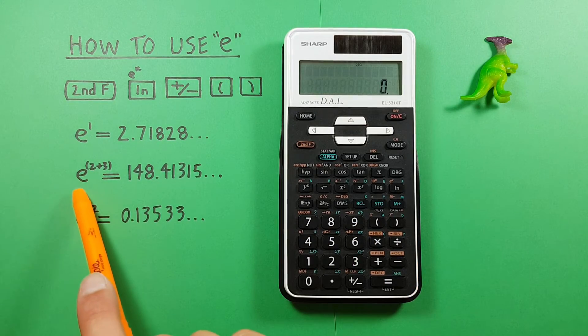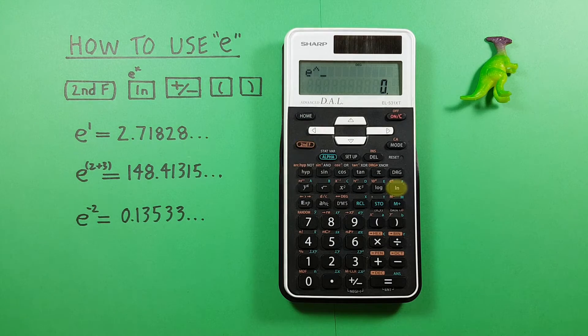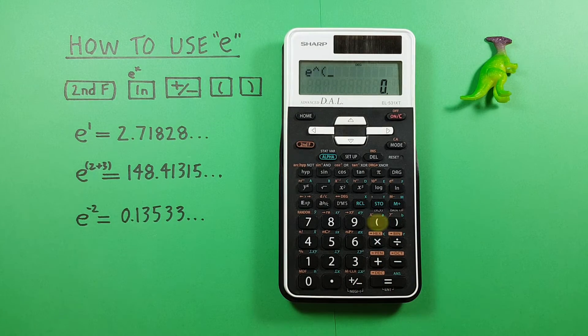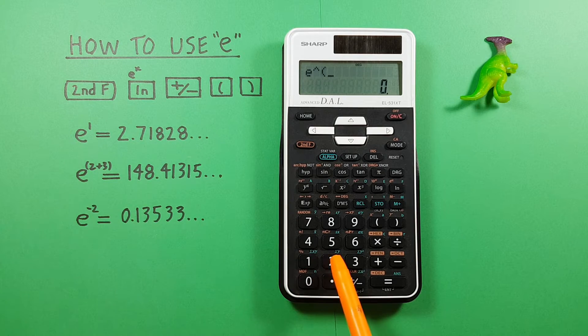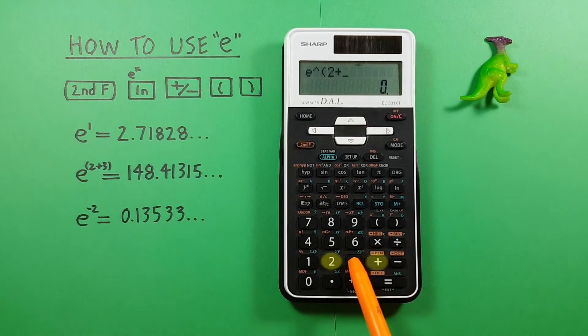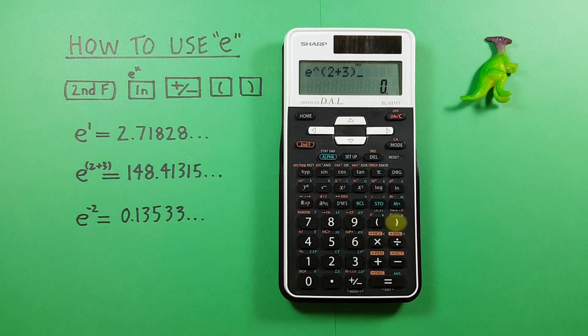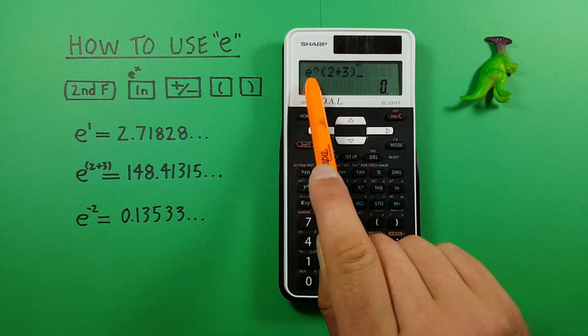So to get started again we go second and then ln and then we open our brackets with the left bracket and then enter our 2 plus 3 and then close our brackets. This lets our calculator know that everything inside the brackets is considered the exponent of e.